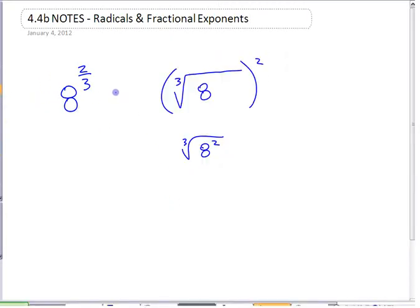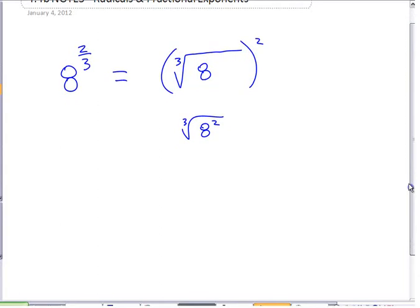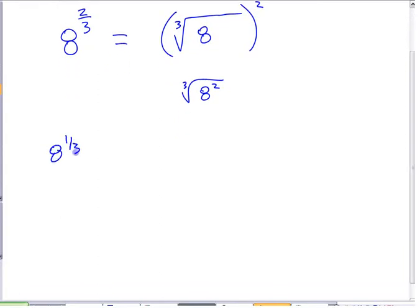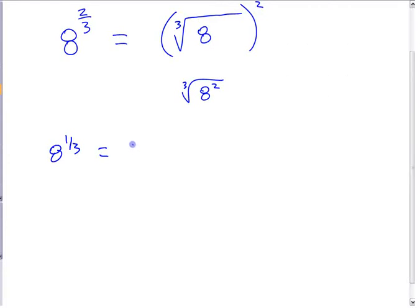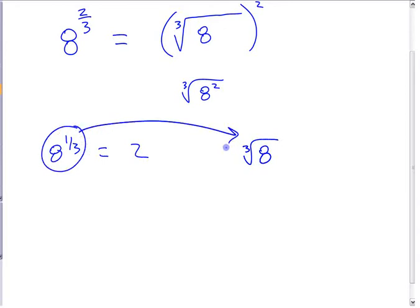We want to see why those are equal. If you have 8 to the 1 third — remember what it was on the calculator? It was 2. What does that mean? You've looked at what the power of 1 third means. Raising something to the power of 1 third is the same as writing the cube root of 8. 8 to the power of 1 third is the cube root of 8.